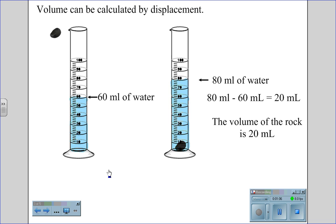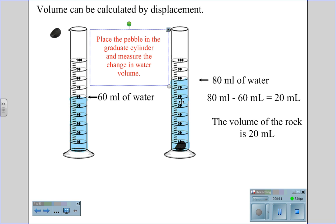Volume can also be calculated by displacement. If we have 60 milliliters of water and we add a pebble to the cylinder, we notice that the height of the water changes. This 80 milliliter value minus the original 60 milliliters gives you 20 milliliters. Therefore, the volume of the rock is 20 milliliters.